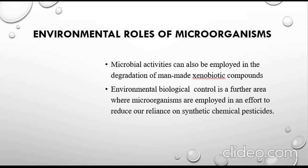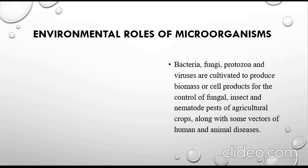Environmental biological control is a further area where microorganisms are employed in an effort to reduce our reliance on systematic chemical pesticides. Bacteria, fungi, protozoa, and viruses are cultivated to produce biomass and cell products for the control of fungal, insect, and nematode pests on agricultural crops.